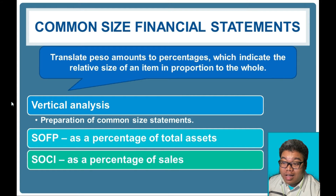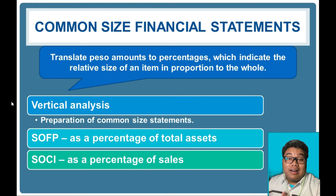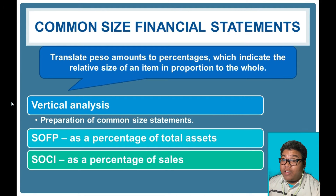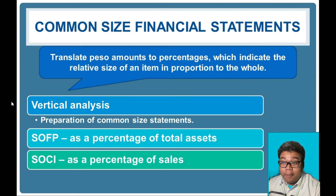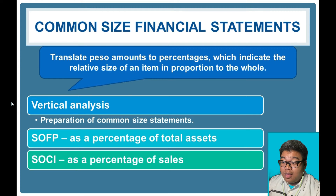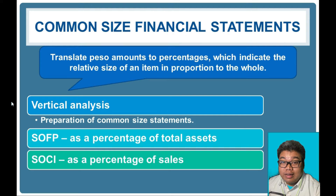When we do this for the statement of financial position, we consider amounts as a percentage of total assets. For the statement of comprehensive income, it is percentage of net sales. These are the highest figures in each statement — for financial position it is total assets, and for comprehensive income it is net sales.